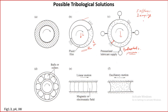This damping effect comes from the viscoelastic nature of the lubricant. The next solution is rolling element bearings, where balls or rollers can be used, and there are different types of geometries for this kind of bearing.